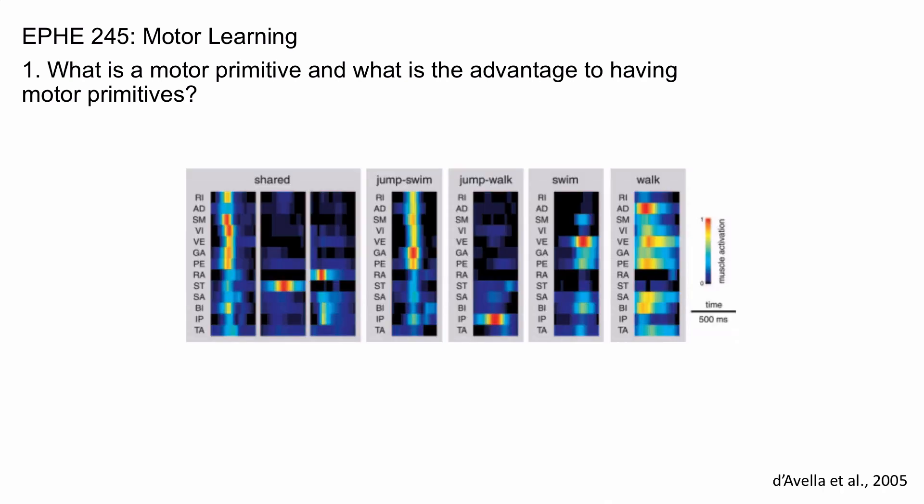This is from a study by Devella et al. in 2005. So what Devella et al. showed was that things like swimming and walking and jump-swim and jump-walk combos were comprised of a series of shared primitives. So you add up the shared primitives in different ways and you get these individual actions.